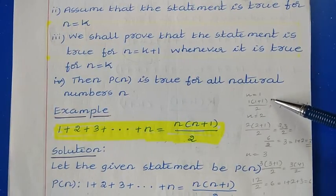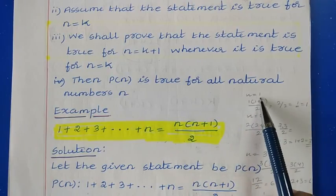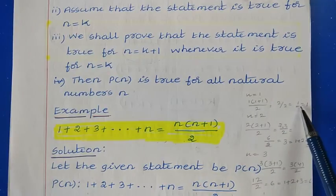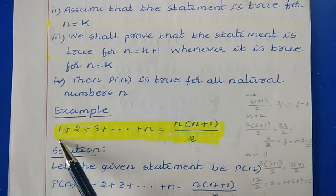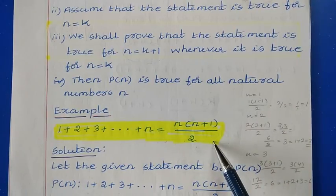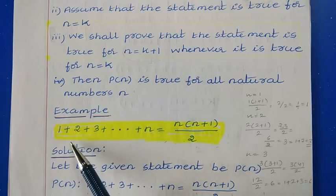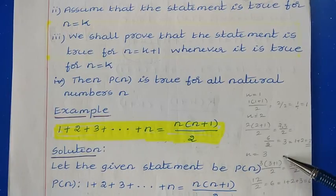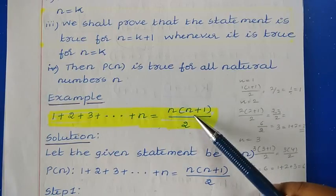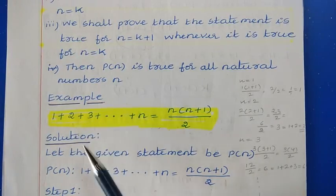For example, for n equal to 1, from the left-hand side we take the first term, which is 1. From the right-hand side, putting n equal to 1 gives 1 into 2 divided by 2, which equals 1. So LHS equals RHS and the statement is true for n equal to 1. For n equal to 2, the right-hand side gives 3, and on the left-hand side 1 plus 2 is also 3. For n equal to 3, both sides give 6, since 1 plus 2 plus 3 equals 6.